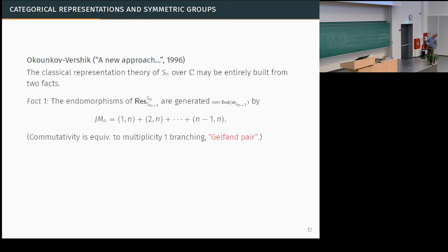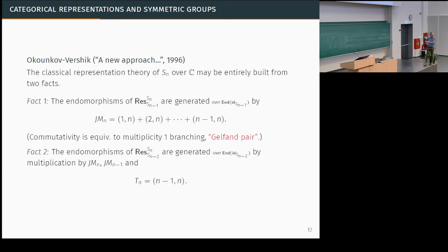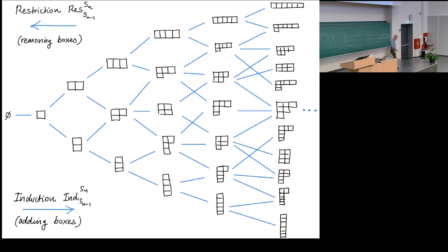You might dream of generating everything from this observation, but not quite — you also need to know what happens when you restrict back twice. There's an element T_{n, n-1, n} that commutes with S_{n-2} and provides another endomorphism. When you restrict down twice, you don't quite have multiplicity-one branching, but it's controlled by a reasonably simple algebra called a degenerate affine Hecke algebra. Okounkov and Vershik pointed out that these two approaches can be used to build the whole representation theory of the symmetric group.